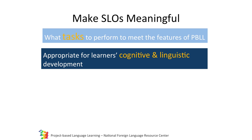Second, we have to think about learners' cognitive and linguistic development. If we give learners with basic language ability a very complex task, they may be frustrated. But that shouldn't prevent us from giving our students intellectually challenging tasks. It only means that we have to scaffold our learners to perform simpler tasks step-by-step before progressing to more complex tasks.